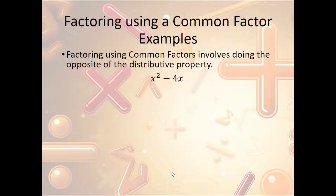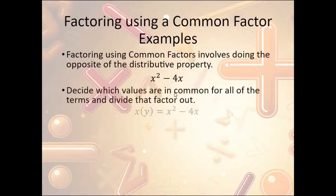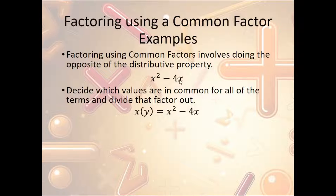Let's look at some examples. We have x squared minus 4x. We're looking for something in common that we can divide out of both terms. We have an x in both of them, so we can divide that out. x squared divided by x is just x, and negative 4x divided by x is just negative 4. So we get x times (x minus 4).